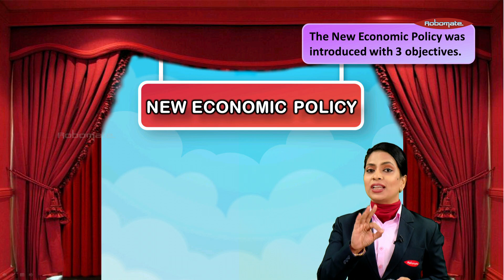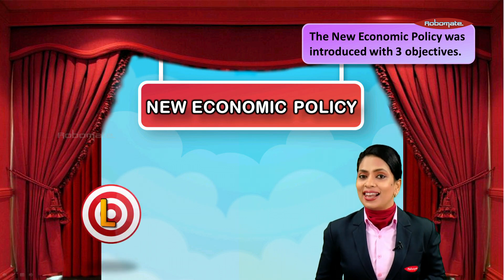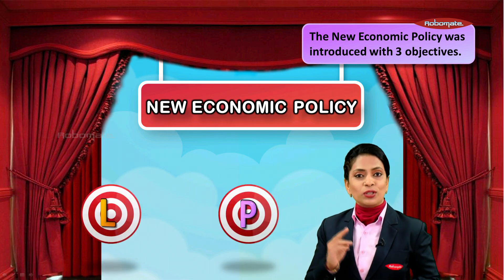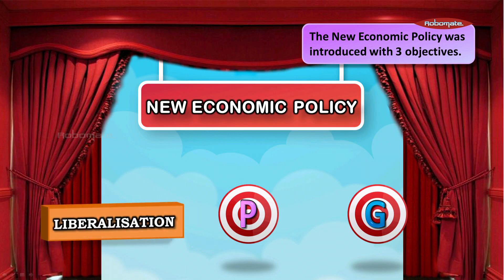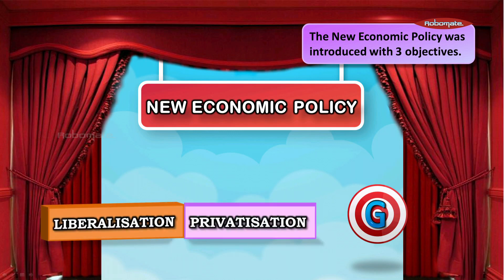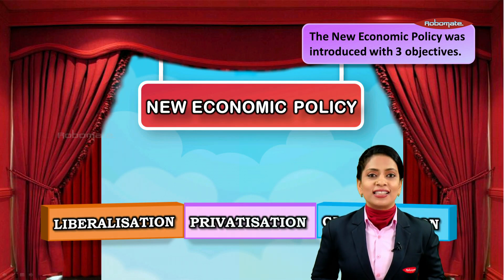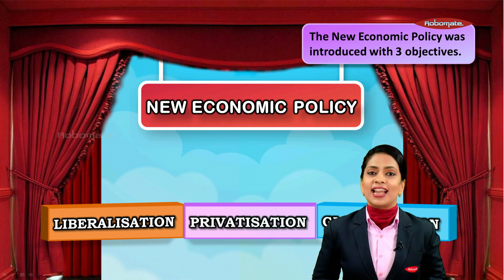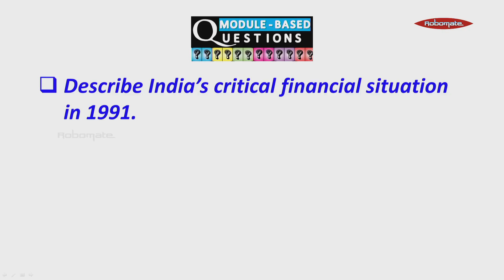On July 24, 1991, the Government of India introduced the New Economic Policy with three objectives: L, P, and G — Liberalization, Privatization, and Globalization. In the coming modules of this lesson, we shall understand each one of them beautifully.